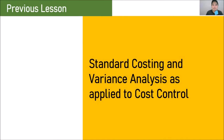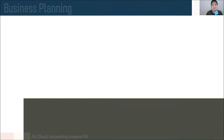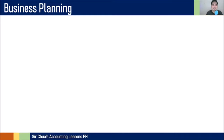Our previous lesson is about Standard Costing and Variance Analysis as applied to cost control. You know how to do standard costing already and how to interpret variances, and you have applied it on the concept of control. And now, we are moving on to another tool that managers can use in both planning, decision-making, and even in controlling, which is budgeting or the preparation of a master budget.